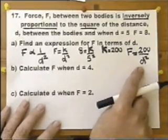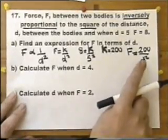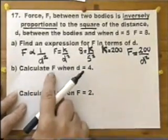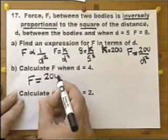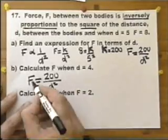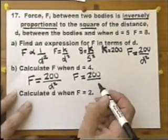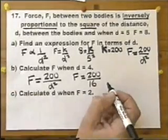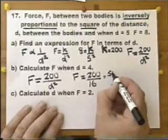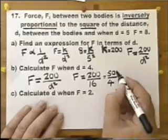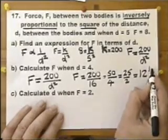Part A asks for a formula for F in terms of D. Now using that formula we can do part B. Part B says calculate F when D equals 4. So using the formula F equals 200 over D squared, we replace D with 4: F equals 200 over 4 squared, which is 200 over 16. This is not a calculator paper, so we cancel — 200 over 16 simplifies to 12.5.